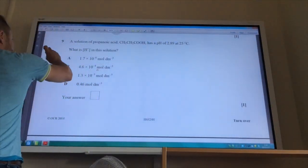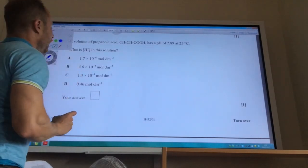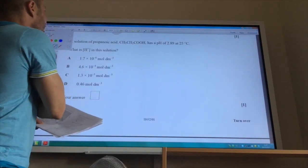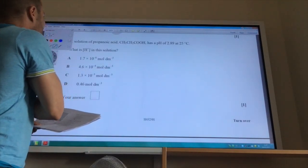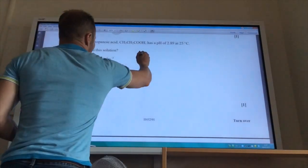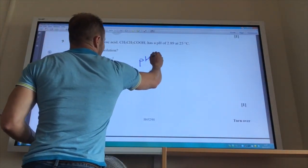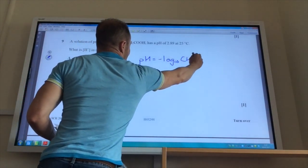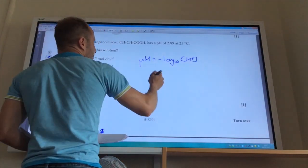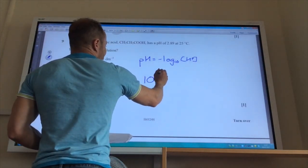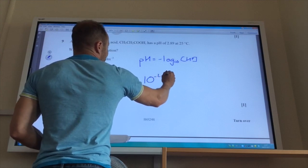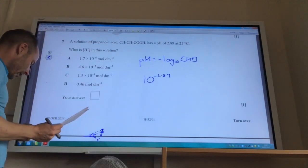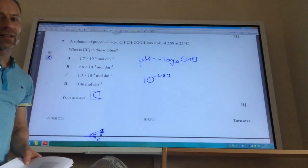We're going to do some pH calculations now. It tells me a solution of propanoic acid has a pH of 2.89. What is the concentration of H plus? Well, you know that pH is equal minus log to the base 10 of H plus. So to find the concentration of H plus, it's 10 to the minus of the pH, which is 2.89. If you bang that in your calculators, you will get the answer as being C.